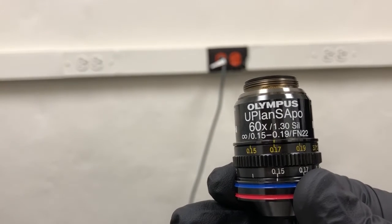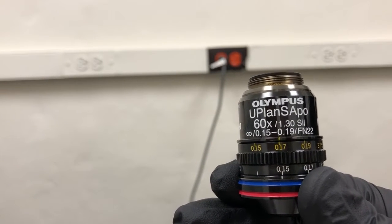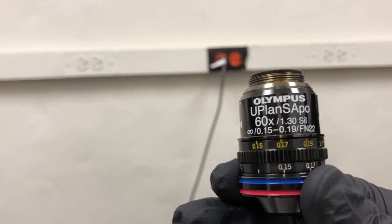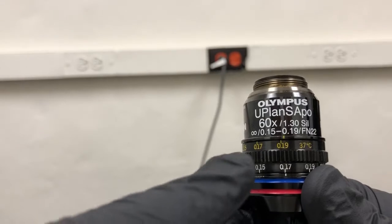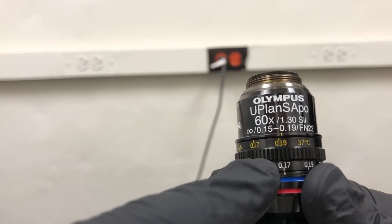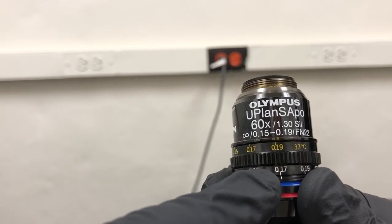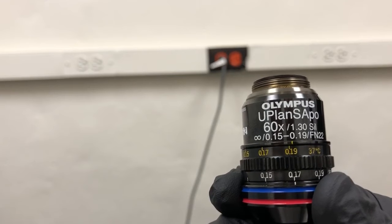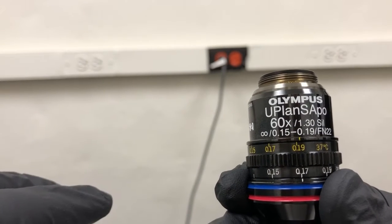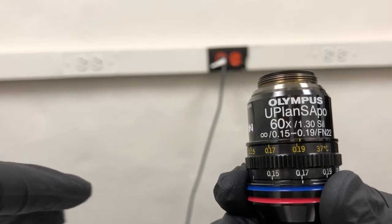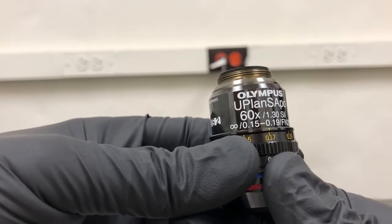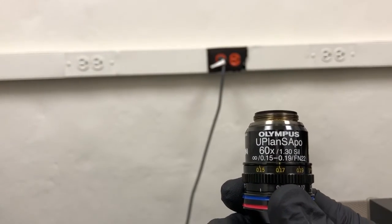If instead we're using a sample at room temperature or we're working with fixed samples where we wouldn't turn on the temperature controller, we want to align the bottom 0.17, the one that's in white for room temperature, with the white marking. Because I'm going to show you how to do live cell imaging, and because that is what is most typically done on this microscope, I'm going to put it back to 0.17 in the orange position.